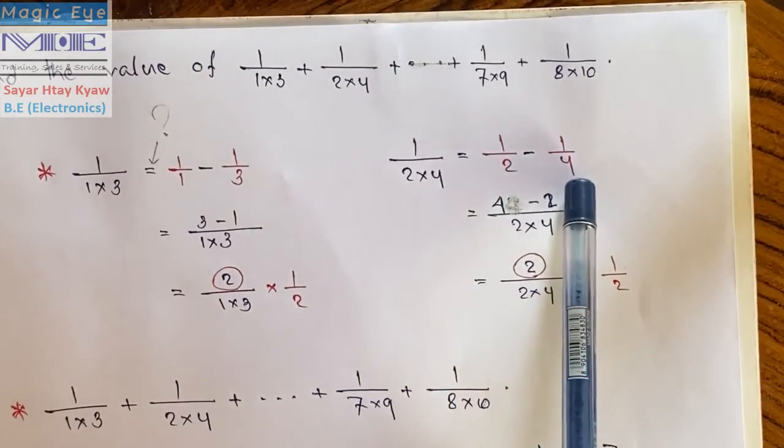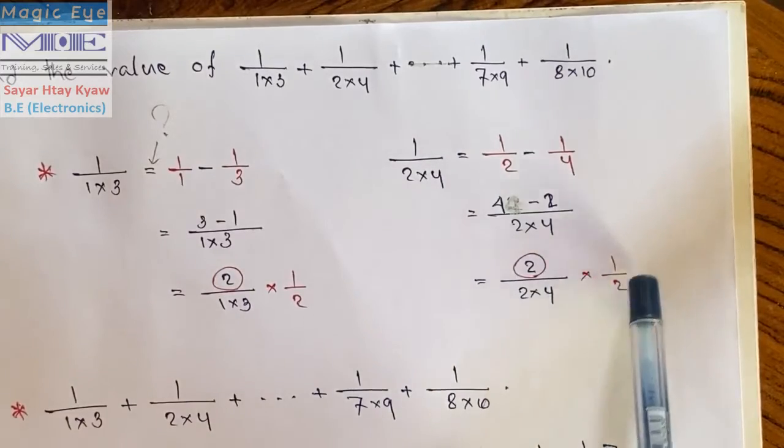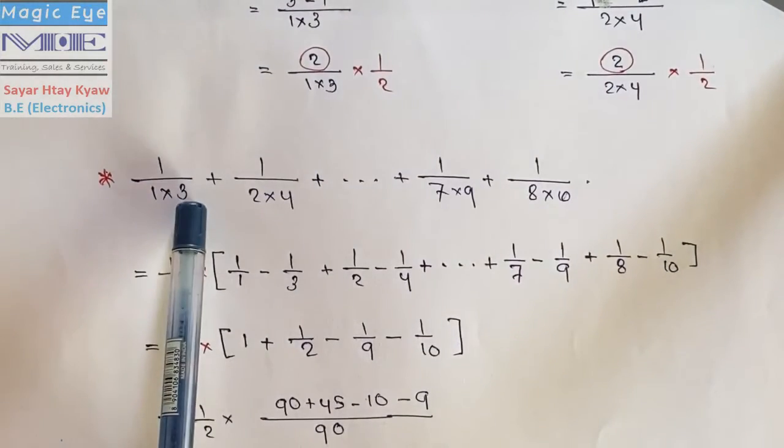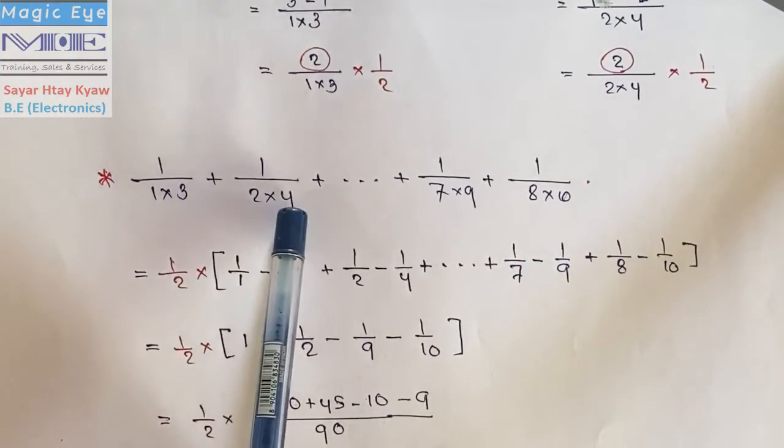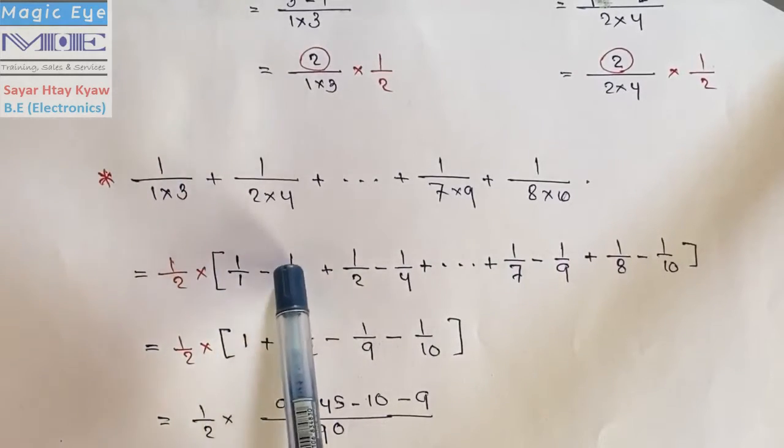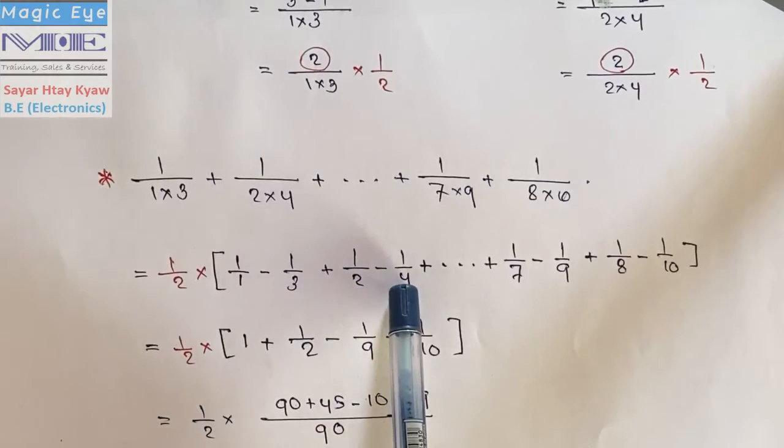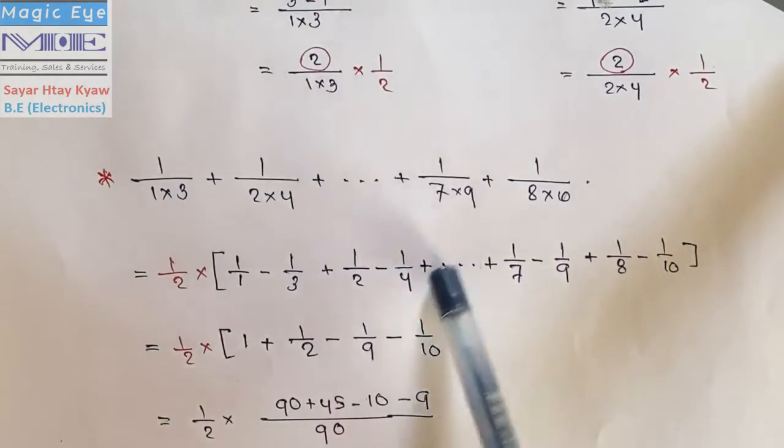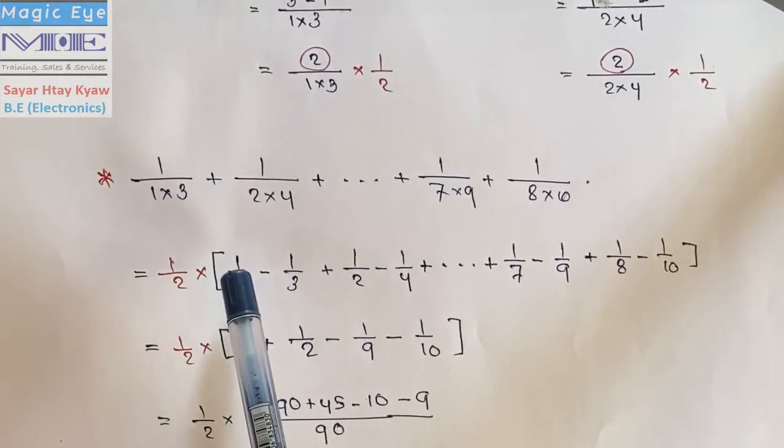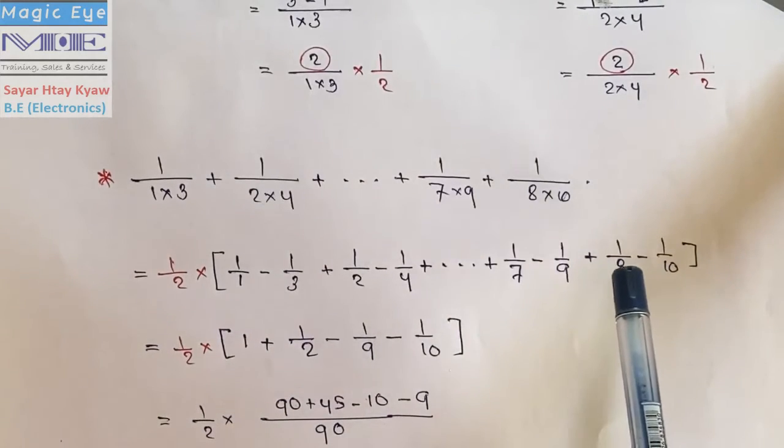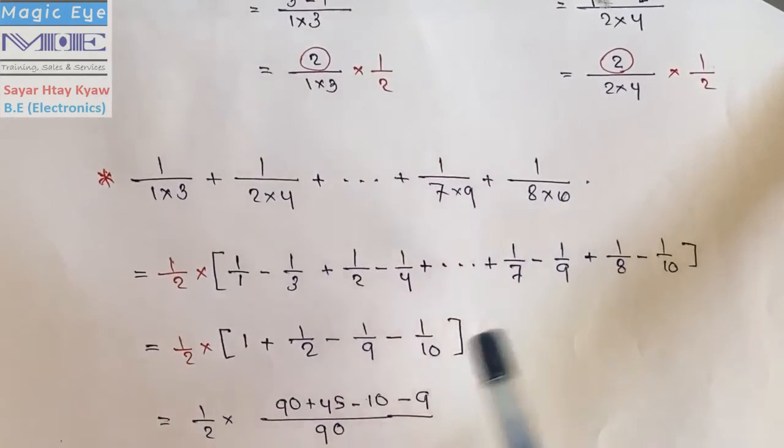Working through the calculation, you need to look at 1 by 1, 1 by 2, and continue the pattern. The terms that remain after cancellation will give you the result.